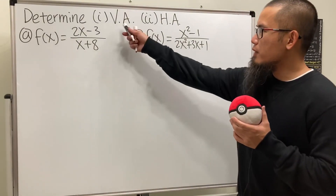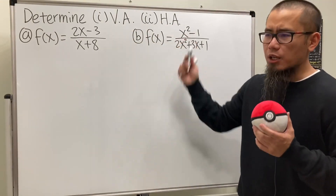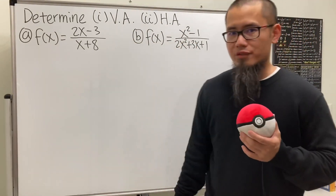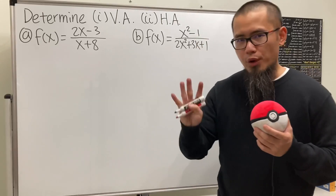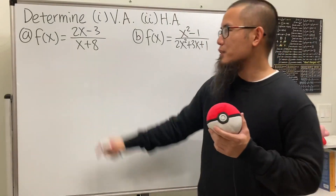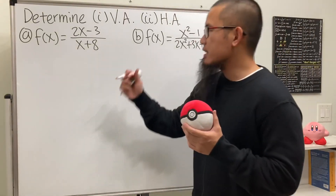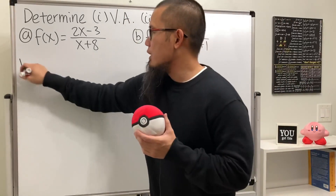How do we find the vertical asymptotes and also the horizontal asymptotes of rational functions? In this video we'll do four examples on just that. This is the first one, and let's get started with the vertical asymptote first.